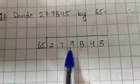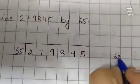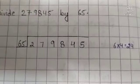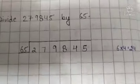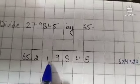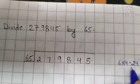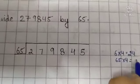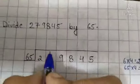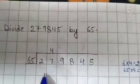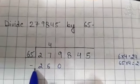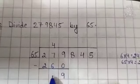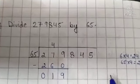6 fours are 24. So multiply 65 by 4. 24 is less than 27. Now we divide, so 65 multiplied by 4 is equal to 260. Now subtract: 9 minus 0 is 9, 7 minus 6 is 1, and 2 minus 2 is 0.